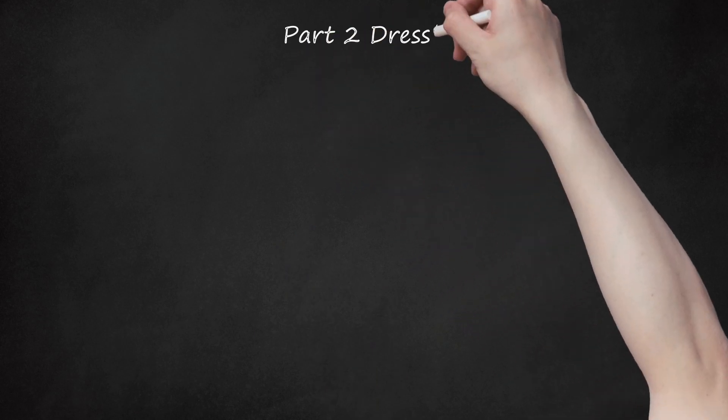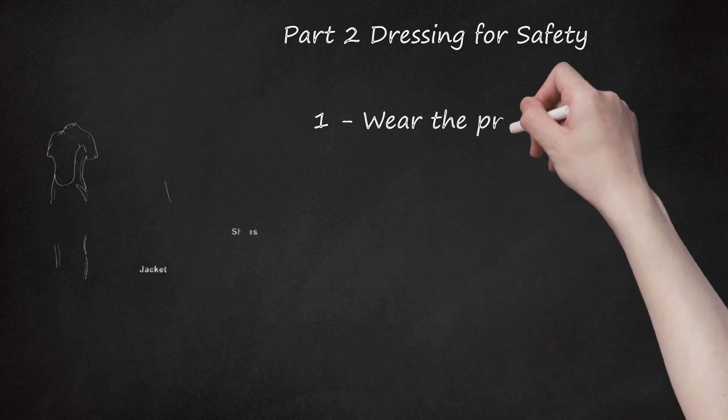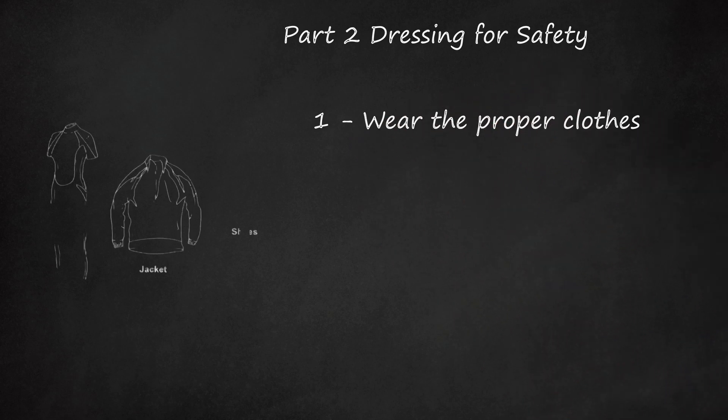Part 2 Dressing for Safety. Wear the Proper Clothes. When sailing, it can be much cooler on the water than it is on shore, due to the wind exposure. It can be helpful to combat this by dressing in layers. Comfortable casual clothes and non-slip shoes are usually suitable for sailing.